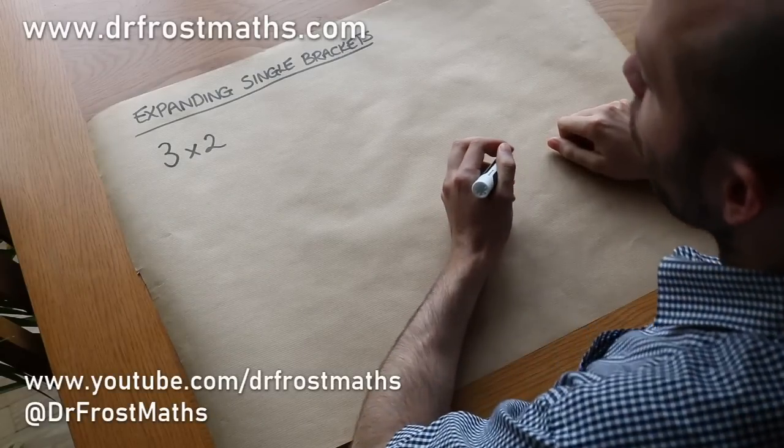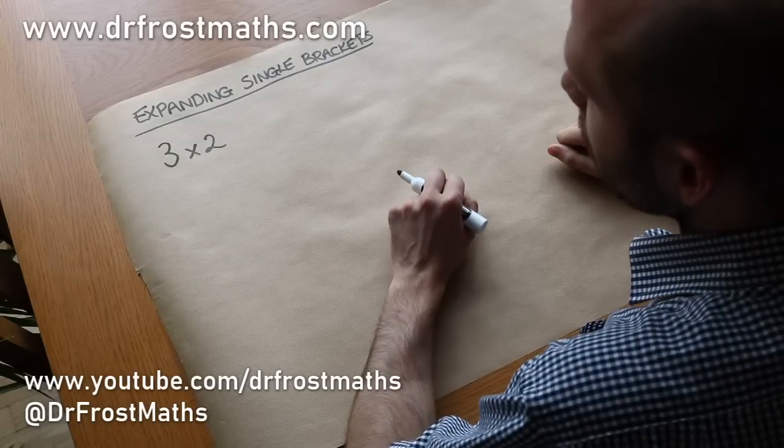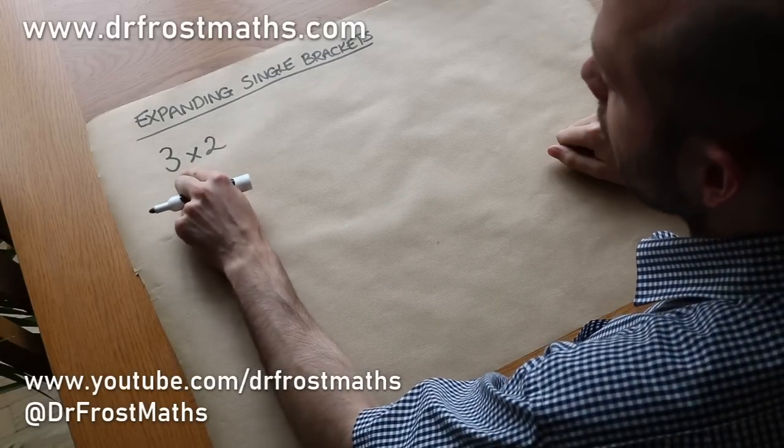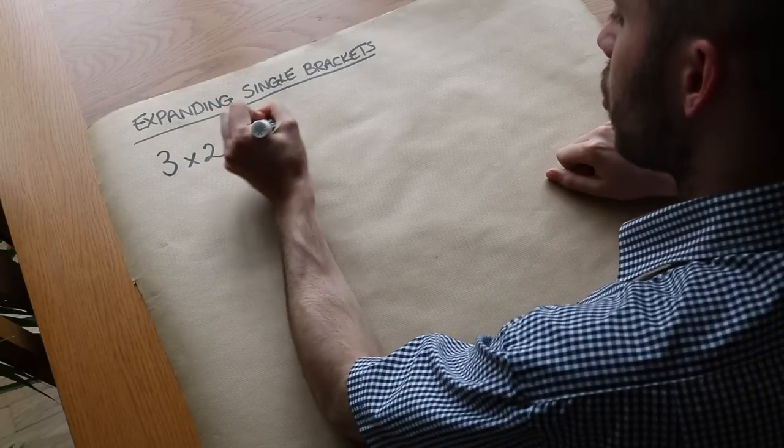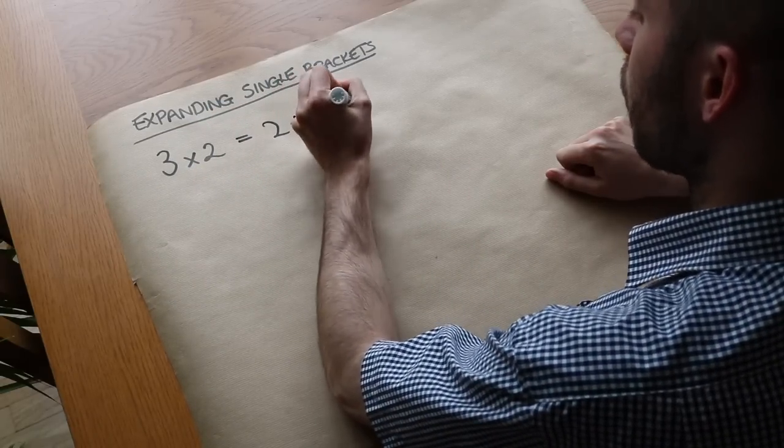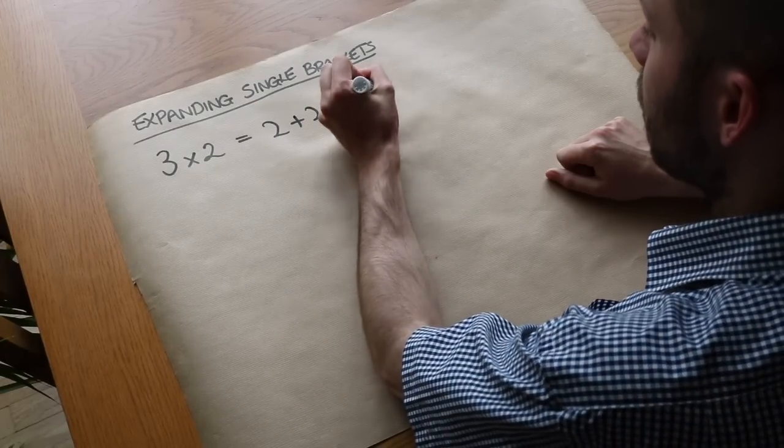Hello and welcome to this video on expanding single brackets. Now if we had 3 times 2, what does that actually mean? We could think of that as 3 lots of 2. So we could have 3 lots of 2, 2 plus 2 plus 2. We've got 3 lots of 2 added together and we know that gives you 6.